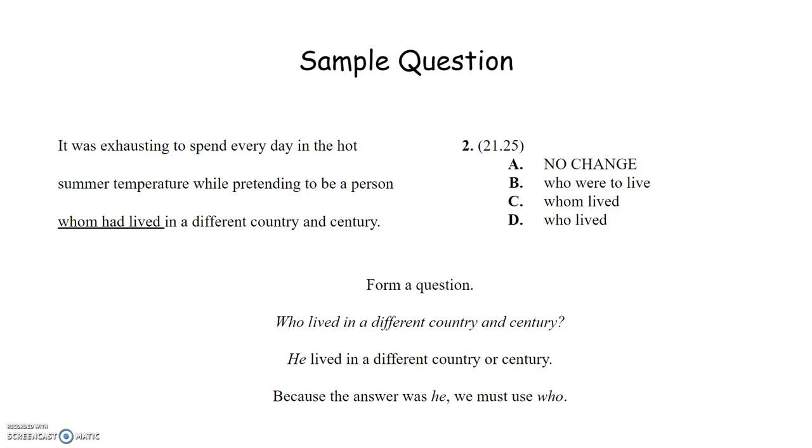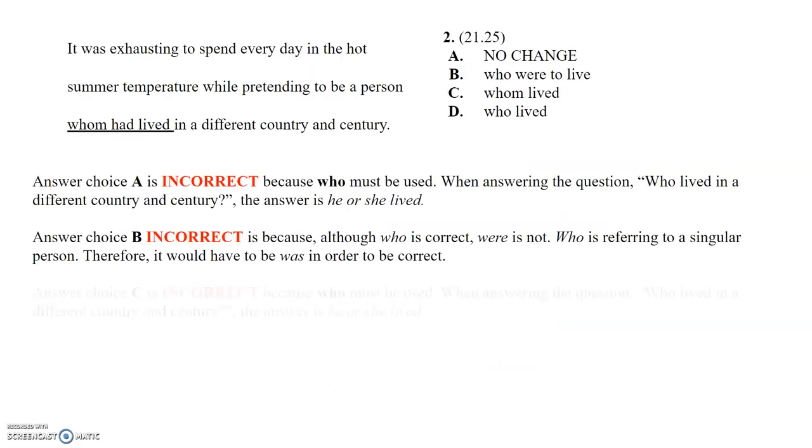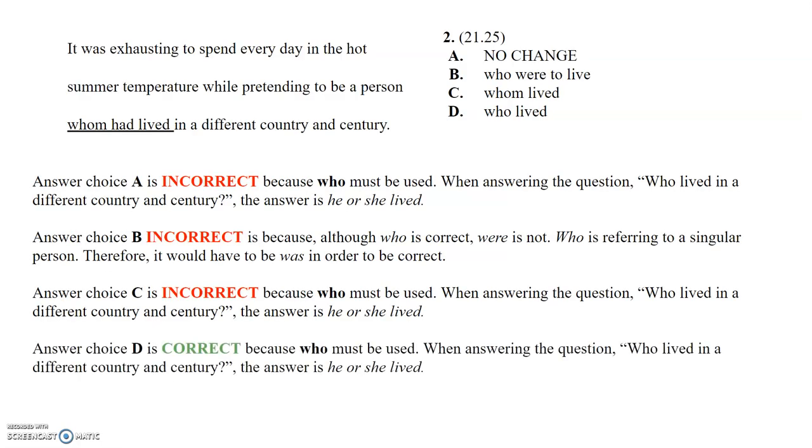We can narrow that down to choices B and D, and now we're just dealing with verb tense, and the answer choice that actually maintains the correct verb tense with the rest of the sentence is answer choice D. If you need further explanation, here they are, but we got it down to the who with our he-him test, and then simply matched the verb tense that we were trying to maintain throughout the sentence.